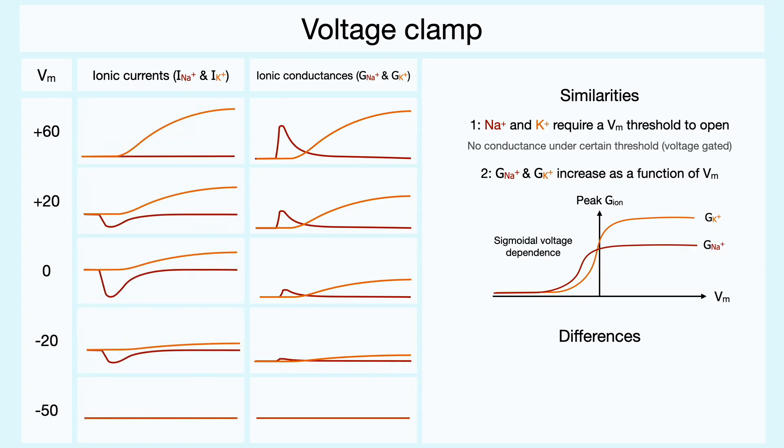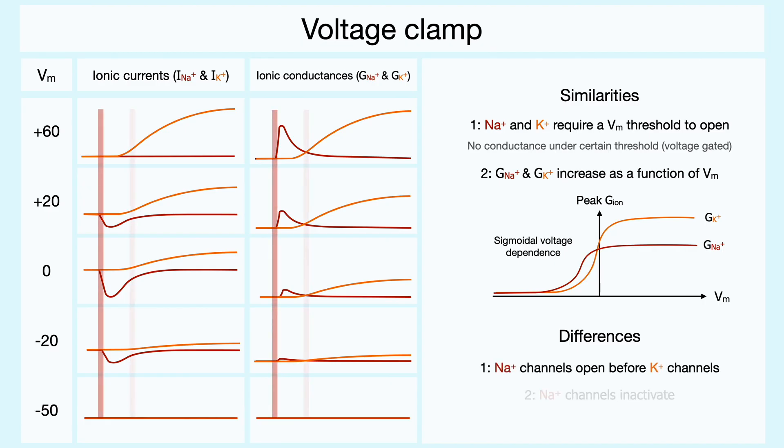In terms of differences, you can see that the sodium channels open more rapidly, and after a short time, they inactivate. On the other hand, the opening of potassium channels is more delayed relative to sodium, and remains sustained. As a result, the time courses of these two ion channels are very different.